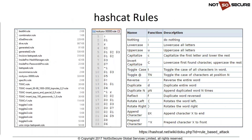Hashcat comes with many built-in rules of varying sizes. Inside each rule file are rule strings — for example, the colon rule means 'do nothing, test the dictionary word as-is'; the letter l means lowercase all letters. Dollar symbols mean append, so dollar-1-2-3 appends 123 to the candidate. You can quickly see how without writing every possible combination, well-written rules let hashcat do the hard work.